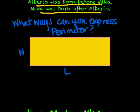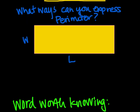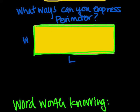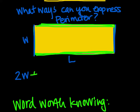In what ways can we express the concept of perimeter? We have a rectangle with a length of W and a width of L, and we know perimeter is essentially taking each one of these lengths or widths and adding them all up. We have two widths to add — so we could say 2W — and there are two lengths as well, so plus 2L, and that equals the perimeter.